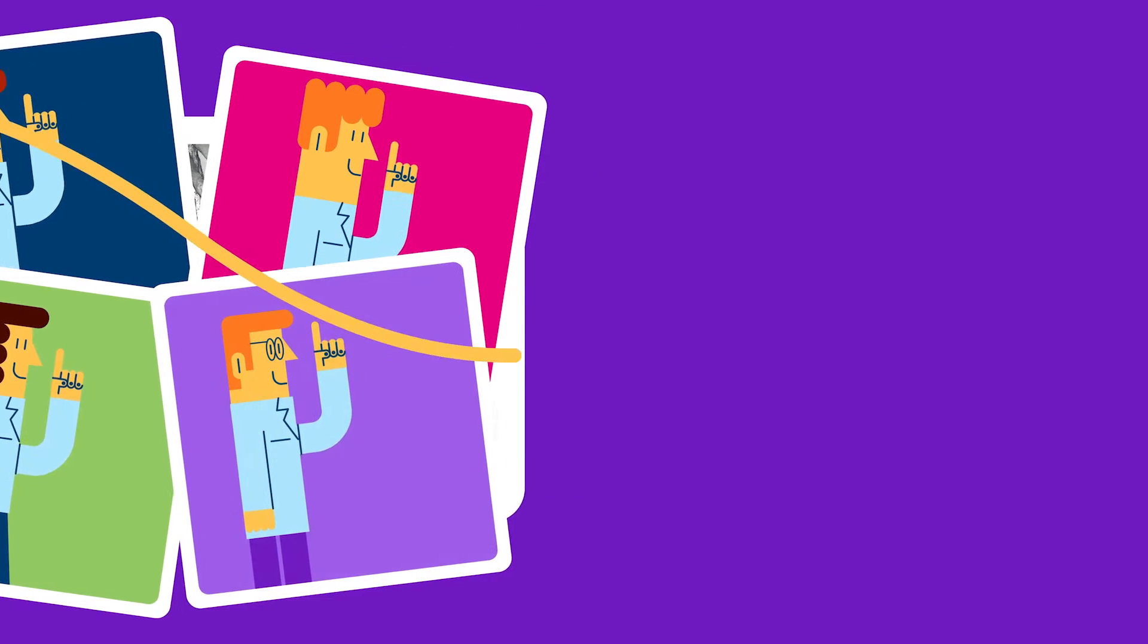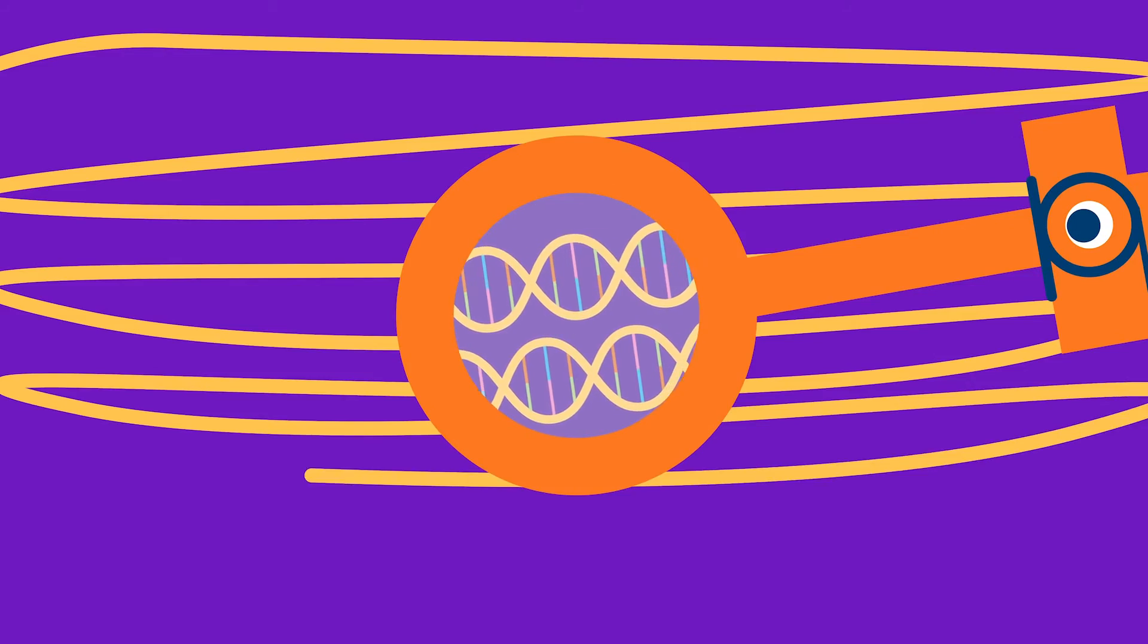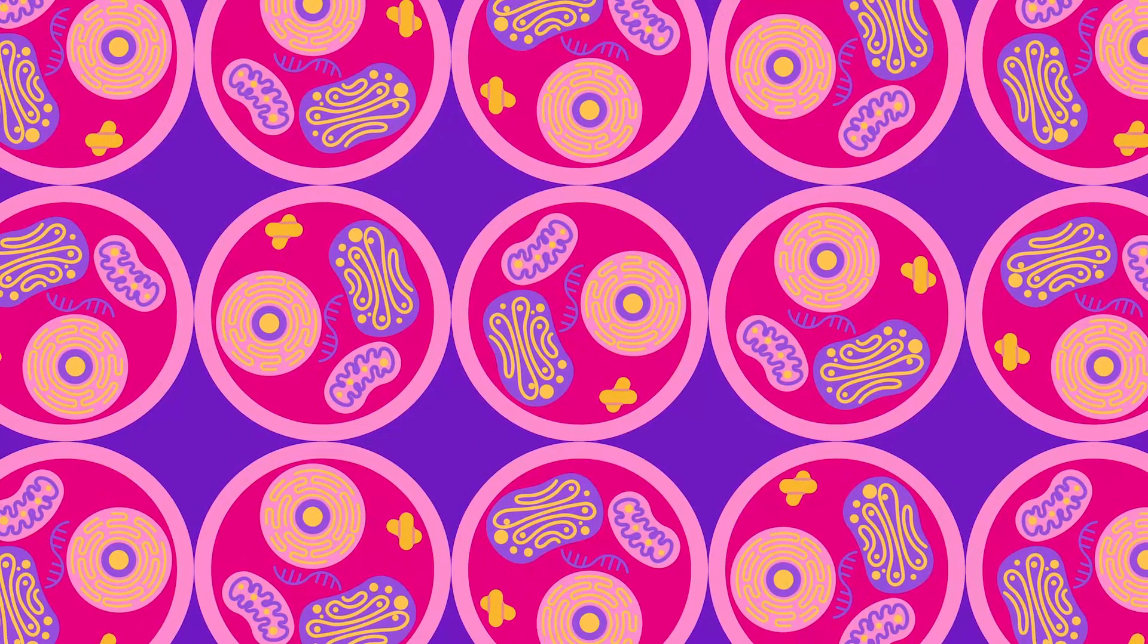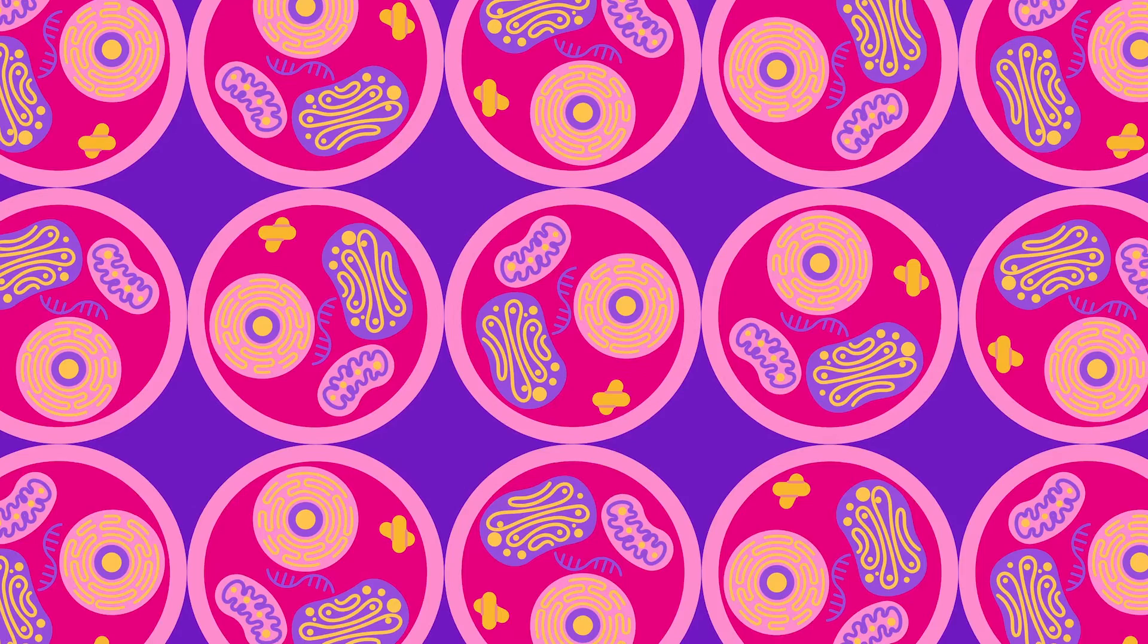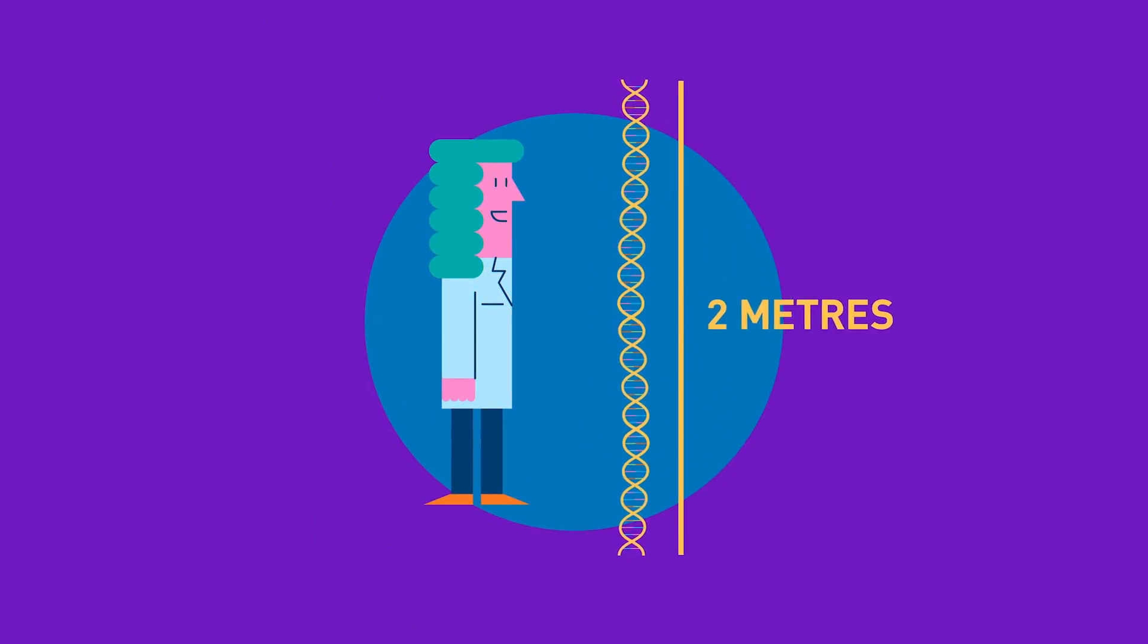DNA is tiny, but very long, like a thin string. It can only be seen with incredibly powerful microscopes, and in almost every one of the trillions of cells that make up your body, there is an entire copy of your DNA. If you stretched out one strand of your DNA, it would be two meters long.